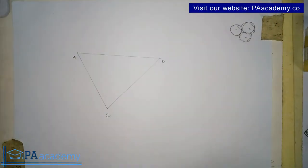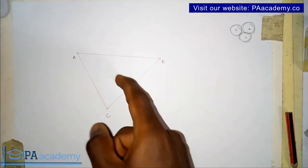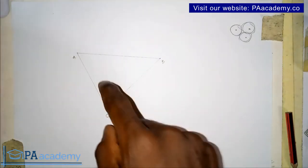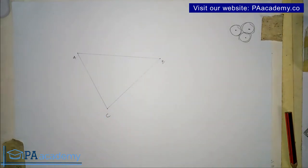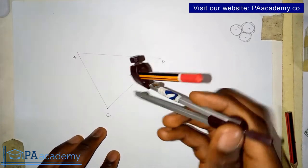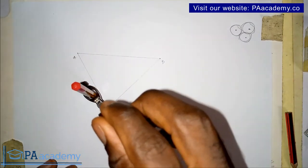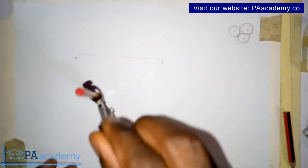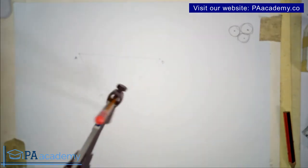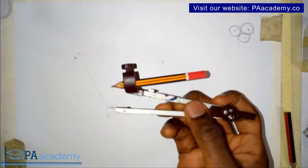The next thing you have to do is bisect any two angles so that we can get the center of this triangle. To do that, pick your compass at any convenient length, draw an arc on line AC, and draw an arc on line CB. Now I want to just increase the length of the compass a bit.